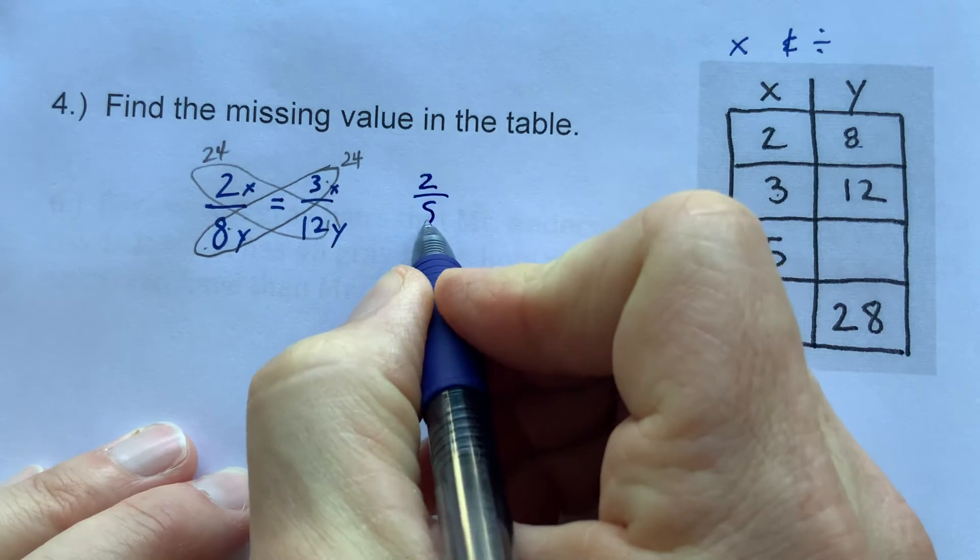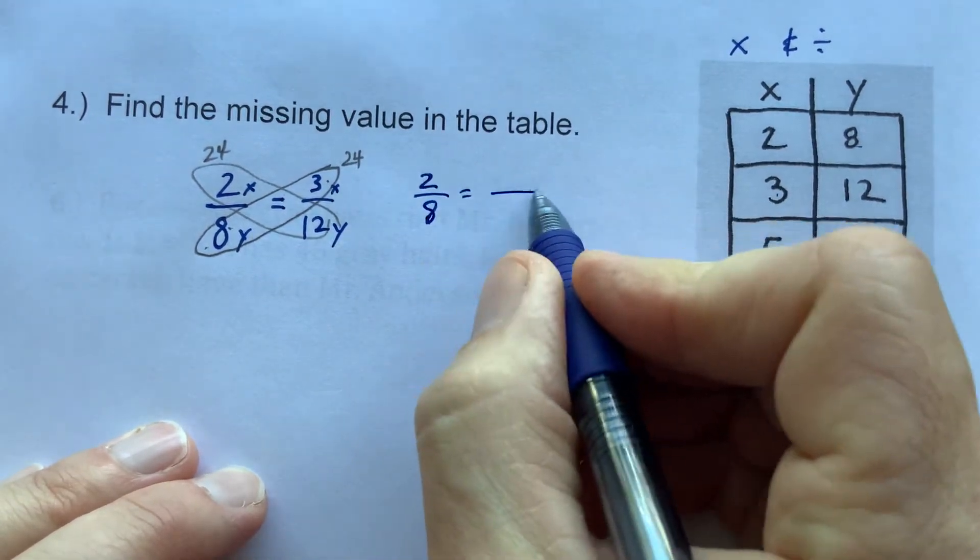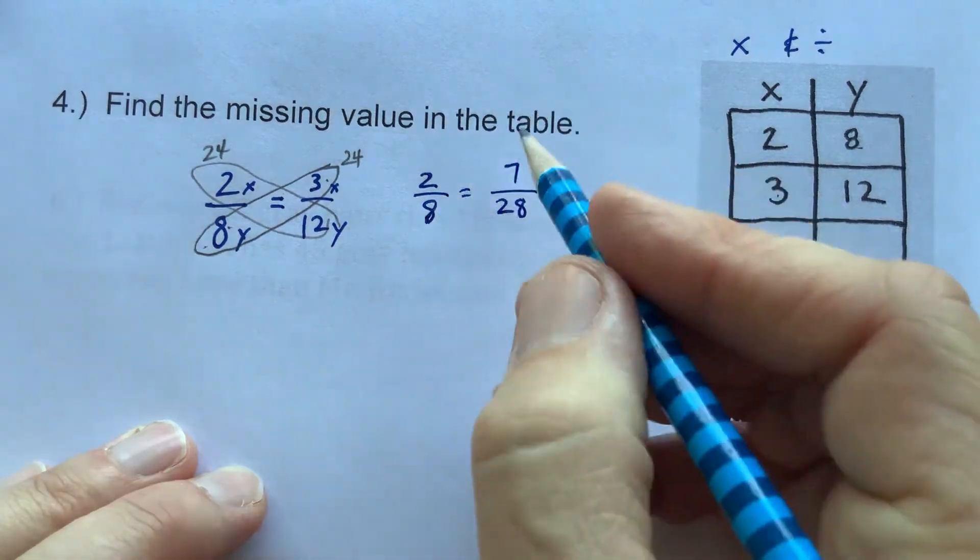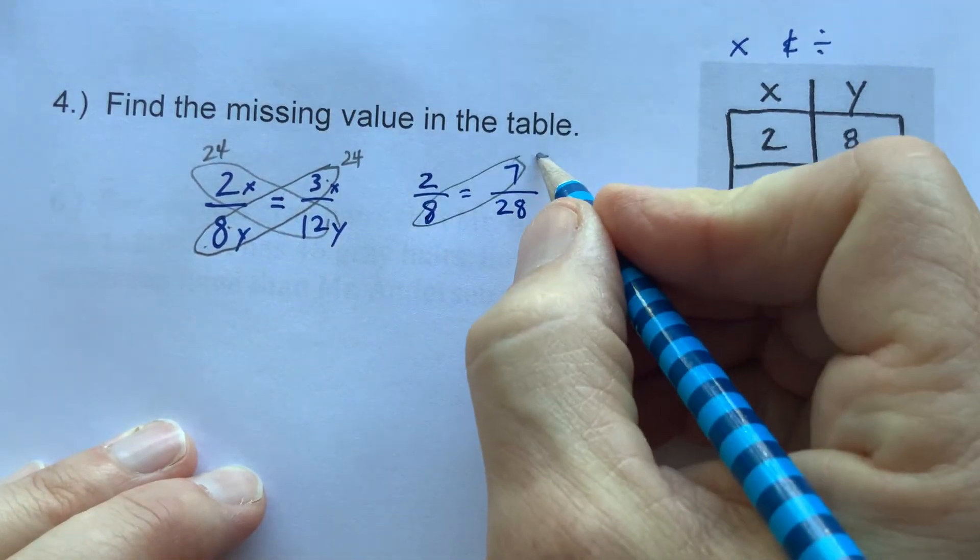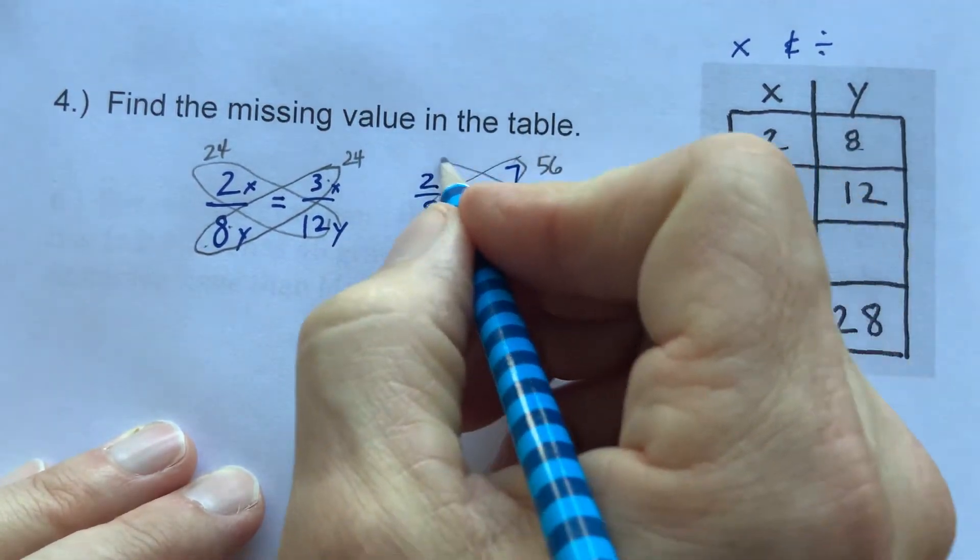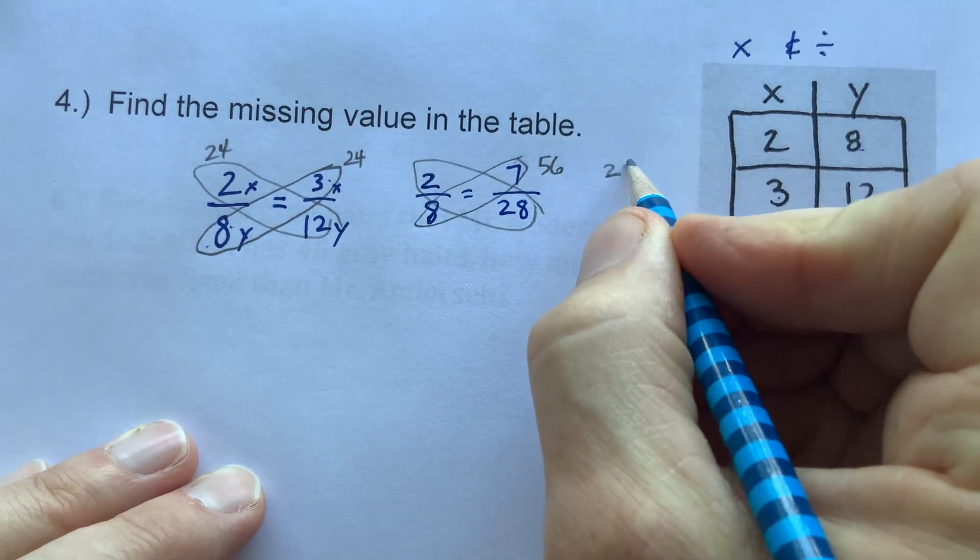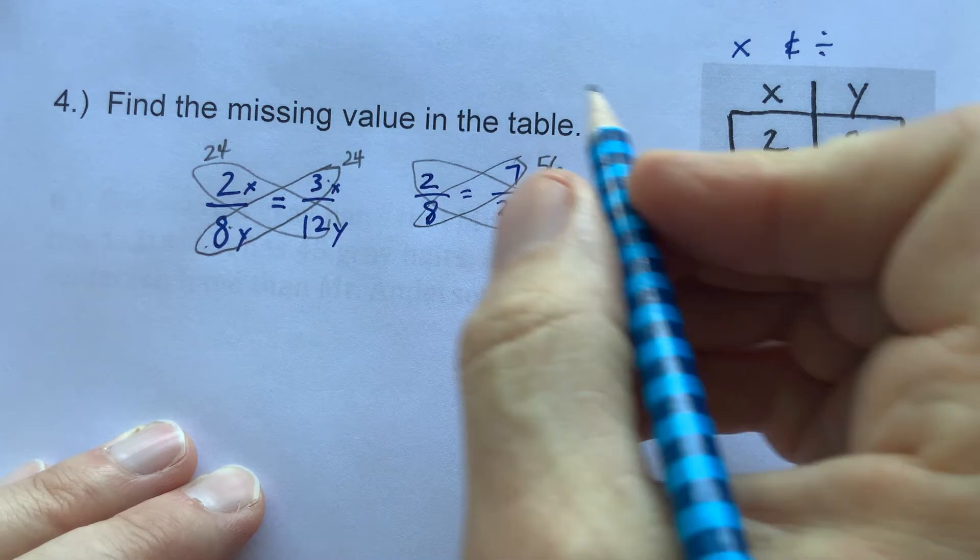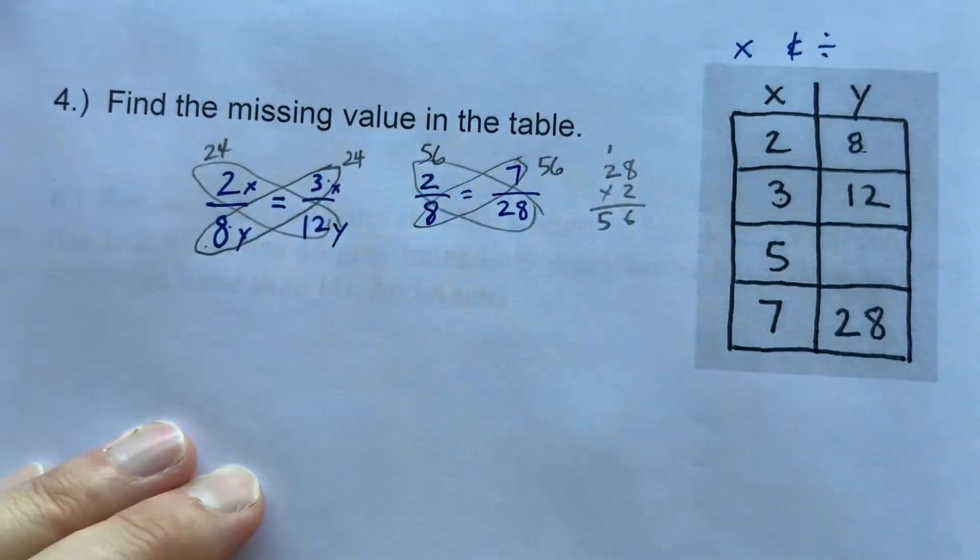Let's try this with the 2 to 8 here and the 7 to 28 here. Let's see if the cross products work again. 8 times 7 is 56, 28 times 2 is 56. So those are equivalent.